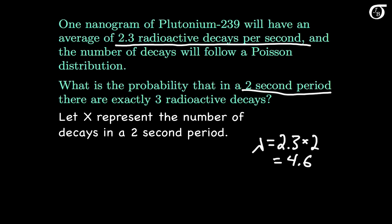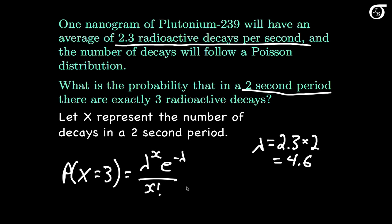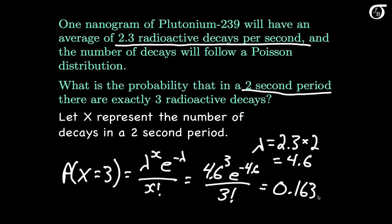So x has a Poisson distribution with lambda equal to 4.6. We want to find the probability that x takes on the value 3. Using the Poisson probability mass function — lambda to the x times e to the minus lambda over x factorial — that's 4.6 raised to the third power times e to the minus 4.6, divided by 3 factorial. Working that out on a calculator or computer, we get approximately 0.163 rounded to 3 decimal places. That is the probability of getting exactly 3 radioactive decays in a 2-second period.